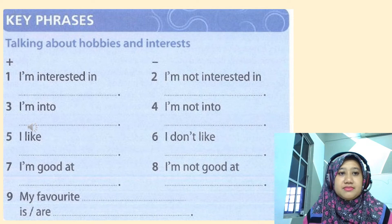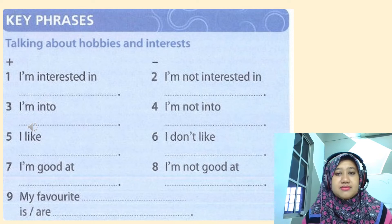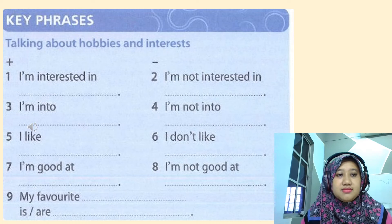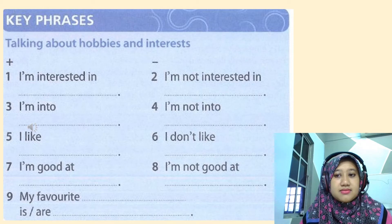Number 1: I'm interested in music. Number 2: I'm not interested in cycling. Number 3: I'm into films and watching TV. Number 4: I'm not into reading. Number 5: I like shopping and meeting friends.